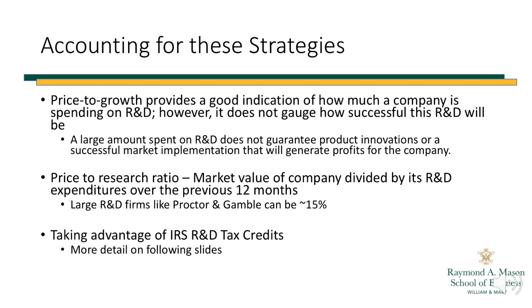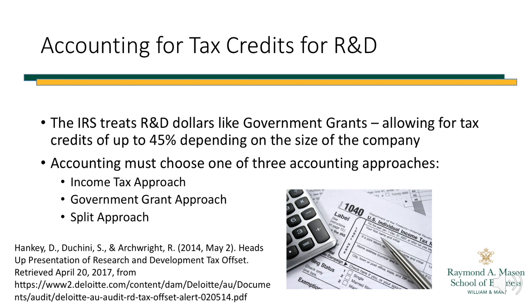One consideration is figuring out how much you're spending on R&D and how much you should spend. Know that spending more on R&D doesn't mean it will be more successful. Interestingly, the federal government gives companies tax credits for R&D — treating R&D dollars like government grants, allowing credits of up to 45% depending on company size. They require three different accounting approaches: an income tax approach, a government grant approach, or a split approach.